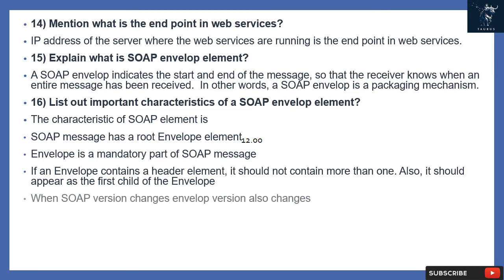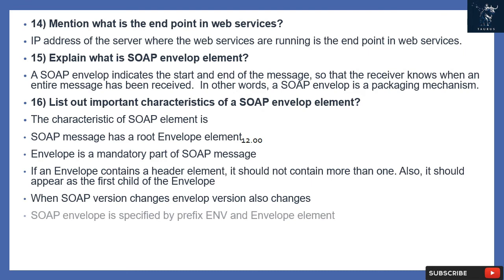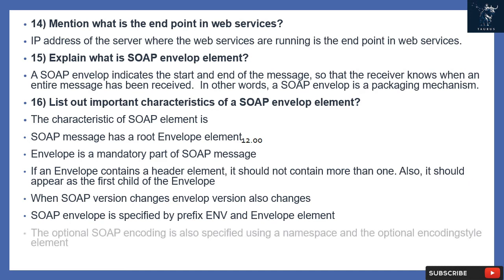Question 16: What are the important characteristics of a SOAP envelope element? A SOAP message has a root envelope element. The envelope is a mandatory part of the SOAP message. If an envelope contains a header element, it should not contain more than one, and it should appear as the first child of the envelope. When the SOAP version changes, the envelope version also changes. The SOAP envelope is specified by the prefix ENV and the envelope element. The optional SOAP encoding is also specified using a namespace in the optional encoding style element.